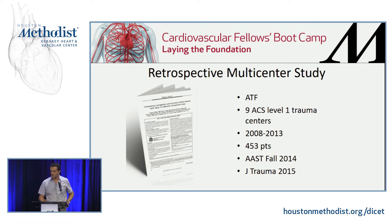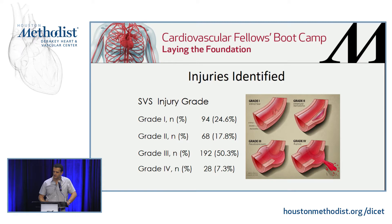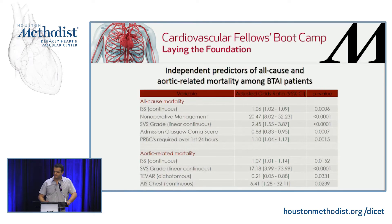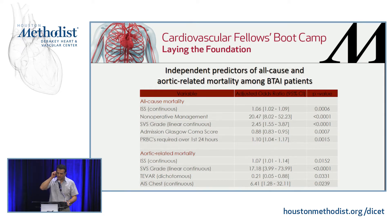The American Trauma Foundation has a retrospective registry. They looked at multiple centers — the majority of injuries were grade 3, the second most were grade 1, and then some grade 4. TEVAR showed lower mortality, which was statistically significant, and not just for all-cause mortality but also for aortic-related mortality. Looking at independent predictors, non-operative management had a high risk factor for mortality, and the worst SVS grade correlated with the worst outcome.